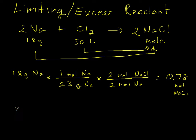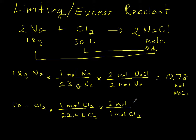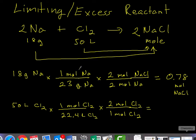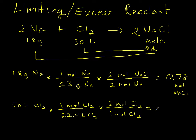So then let's do the other one. When you divide by 22.4 liters and multiply by 2 moles of chlorine you get 4.5 moles of NaCl.